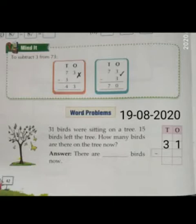31 means 3 tens and 1 one. Now, we write the smaller number, 15. 15 means 1 ten and 5 ones.